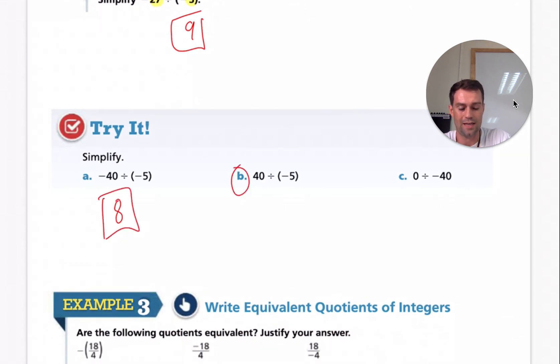B will be negative eight. C, zero divided by anything will be zero. And it's not negative zero. Negative zero is the same as just zero.